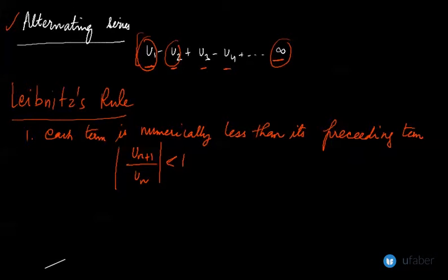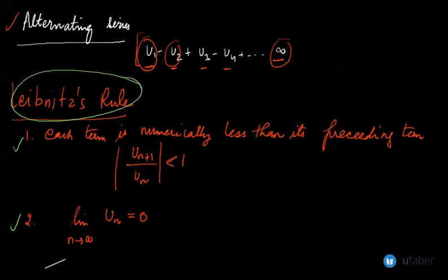And the next condition that you need to fulfill is that limit n to infinity U_n should always be zero. So if these two conditions are satisfied, then only by Leibniz rule your alternating series would be a convergent series, otherwise not.